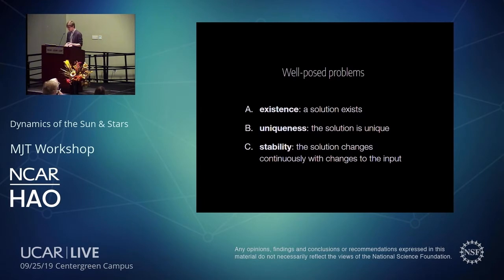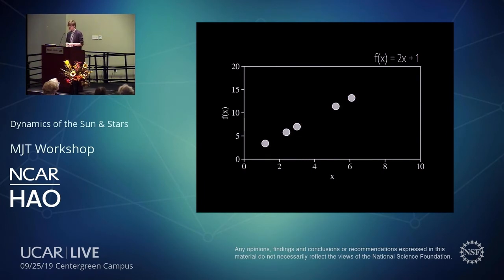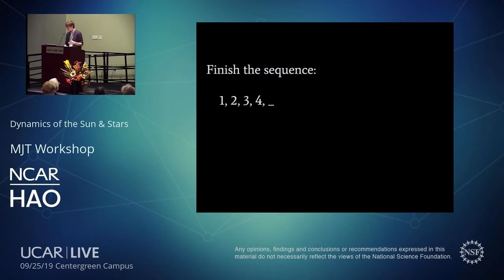A well-posed problem has a solution that exists, is unique, and is stable. For example, a linear model forward problem generates points from a line — that's easy. The inverse problem of finding the line corresponding to those points is well-posed. But if we perturb one of the points, we get an ill-posed inverse problem: there's no line through all the points. We could find the least squares solution, but that changes the problem.